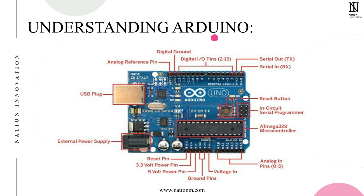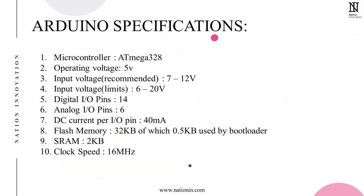Arduino provides two types of voltages: 3.3V and 5V. The board has different pin types — digital pins, analog pins, and PWM pins. The Arduino board contains the ATmega328P microcontroller. These are the basic things we will explore further in this course, but for now you can see the board and understand what it looks like.